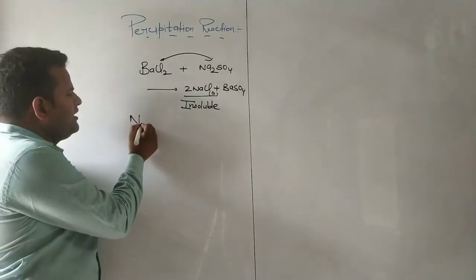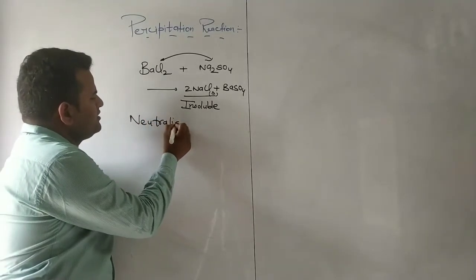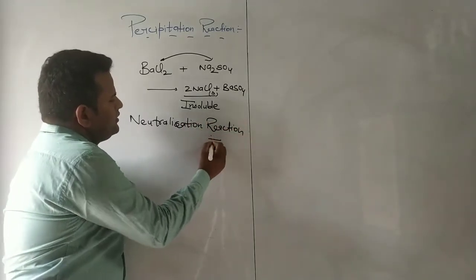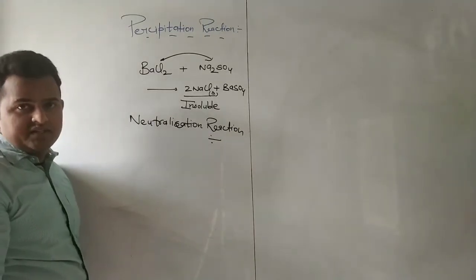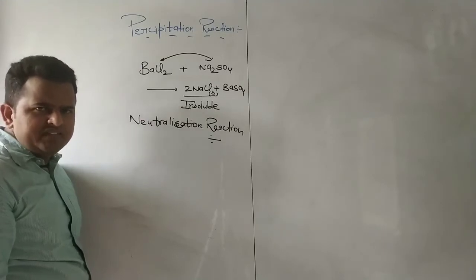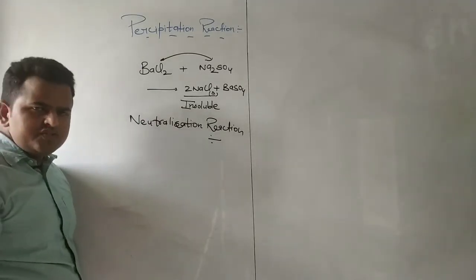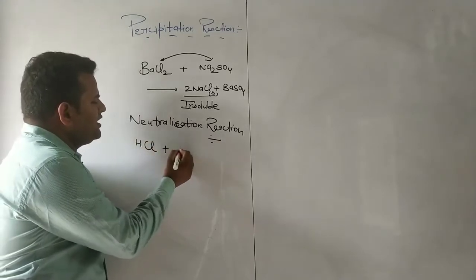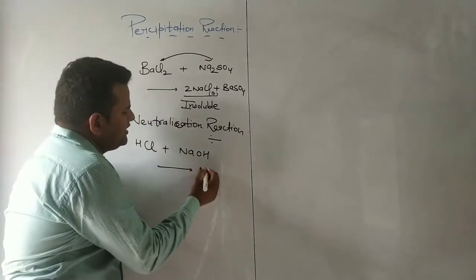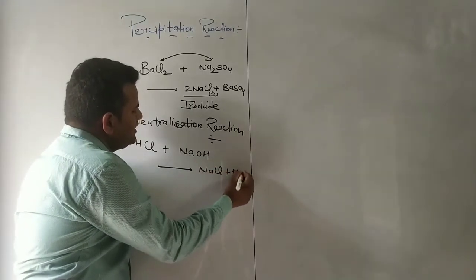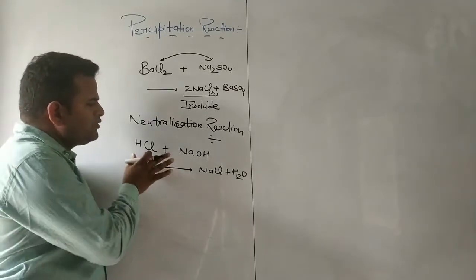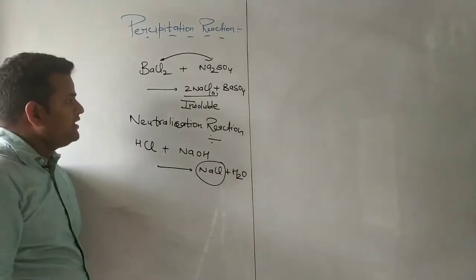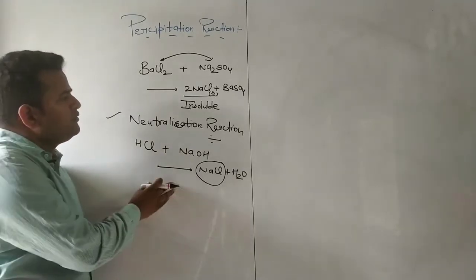There is one more category of double displacement reaction — the neutralization reaction. What is neutralization reaction? If we mix an acid and a base, we get a neutral compound — we call it a neutralization reaction. For example, HCl and NaOH — when we mix this acid and base, we get NaCl plus water. NaCl is a salt, a neutral compound, so we call it a neutralization reaction.